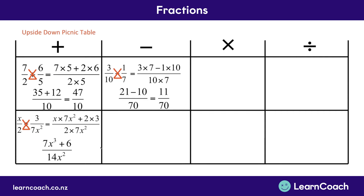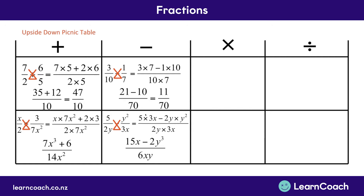Let's look at an example with subtraction using algebraic symbols. Here we're going to have 5 divided by 2y minus y squared divided by 3x, and we're going to use our upside-down picnic table. We've got the 5 up the top multiplied by the 3x down the opposite bottom side. The minus is still in the middle. Then we have the y squared multiplied by the 2y from its opposite bottom side. And on the bottom of the fraction, we have the 2y multiplied by the 3x. We have 5 times 3x gives us 15x, we have negative 2y multiplied by y squared, which gives us minus 2y to the power of 3, and this is all divided by 2y times 3x. So multiplying 2 by 3, we have 6, and we still have our xy down the bottom. This is as simple as we can make it.